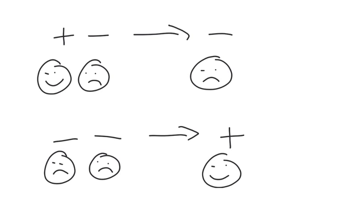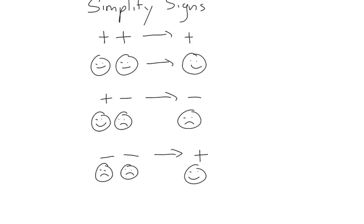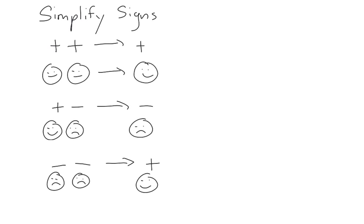To summarize: when you have a positive sign beside a positive sign, it becomes positive. When you have a positive sign beside a negative sign, it becomes negative. And when you have a negative sign beside a negative sign, that becomes positive.